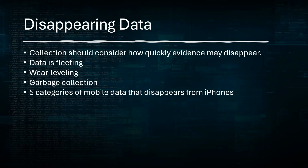Within cell phones there are five categories of mobile data that disappear from the device at any given time. The first is cache location data, which starts to fall off the phone after seven days. Cache location data is really important for knowing when a crime was committed and the activities leading up to or following an incident. It can help unlock additional physical evidence, identify where the device was at a specific time, and allow investigators to see if there was additional information such as CCTV or DVR footage — but you have to grab that within those seven days before it expires.